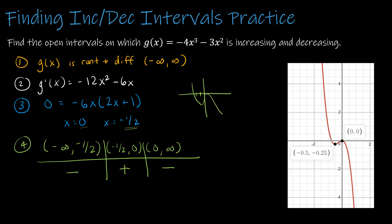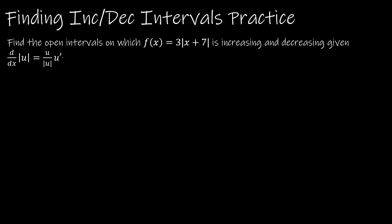Looking at the real graph, we can confirm: it decreases to negative 0.5, increases to 0, then decreases after that. We haven't talked about the y-values yet — we'll get to those in the next video. For one last practice, we have an absolute value function. The good news is it is continuous over the entire domain. However, it is not differentiable at the corner — an absolute value looks like a V and isn't differentiable at that point.